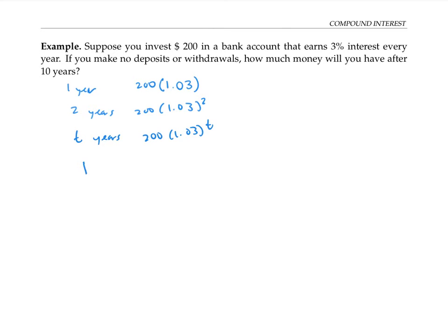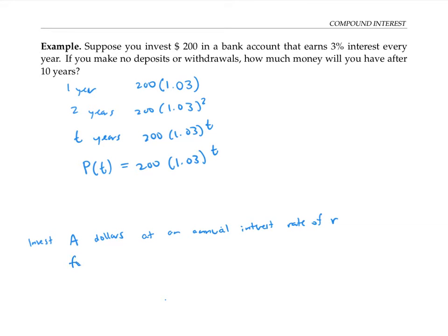So the function modeling the amount of money — I'll call it p(t) — is given by 200 times 1.03 to the t. More generally, if you invest a dollars at an annual interest rate of r for t years, you'll have p(t) equals a times (1 + r) to the t. Here r needs to be written as a decimal, so 0.03 in our example for the 3% annual interest rate.